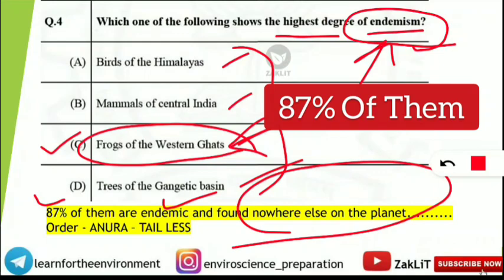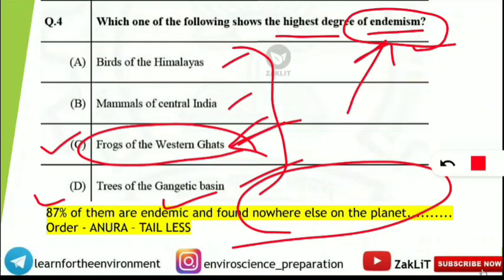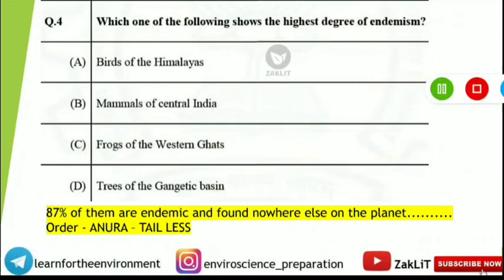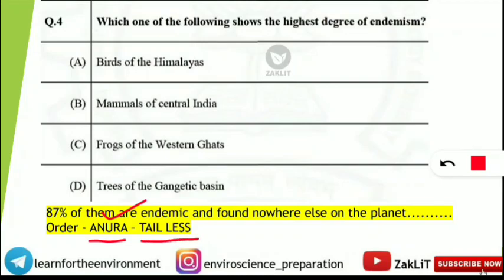You should also know that these frogs belong to the order Anura. Anura means tailless — frogs do not have tails, which is why they are classified as order Anura organisms. Let's move on to the next question.